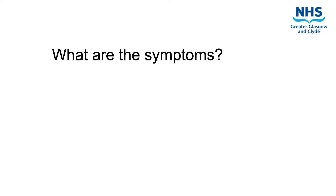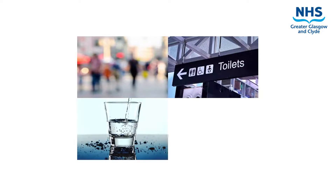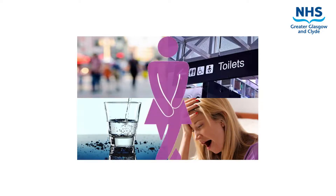There are some classic symptoms of gestational diabetes which you may or may not have experienced before diagnosis. These can include blurred vision, increased urinary frequency, increased thirst, tiredness, and recurrent urinary tract infections or UTIs. These symptoms should subside with an improvement to your blood glucose levels.